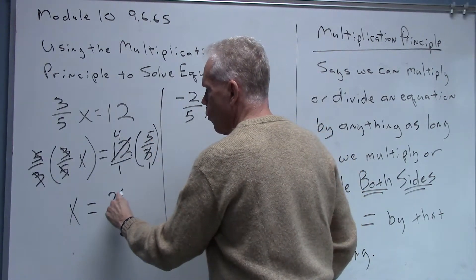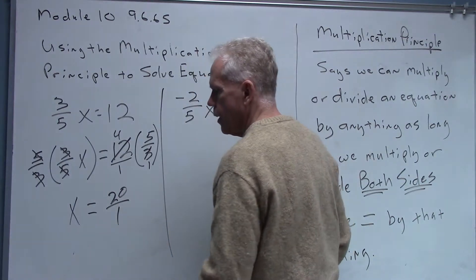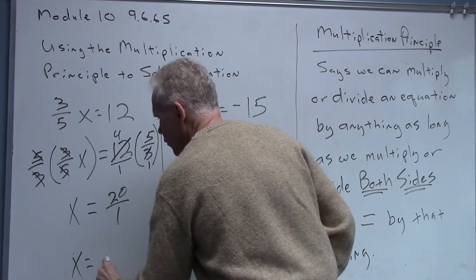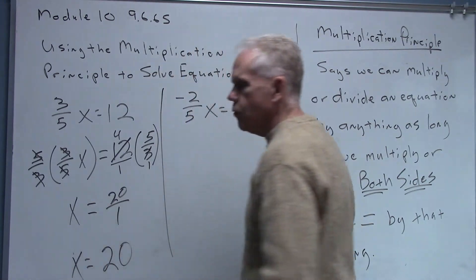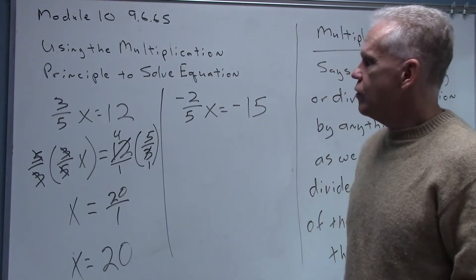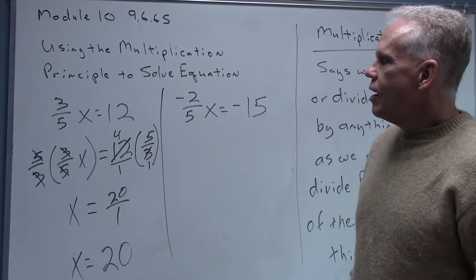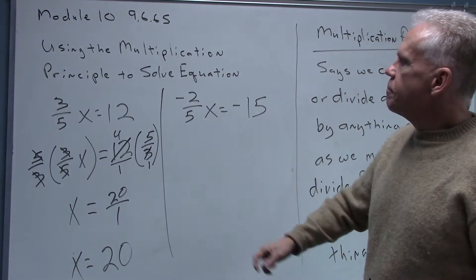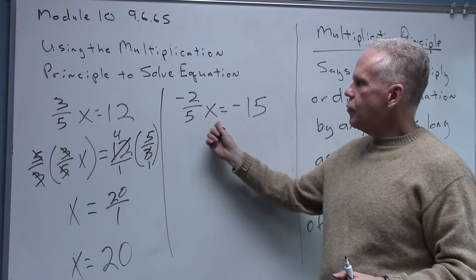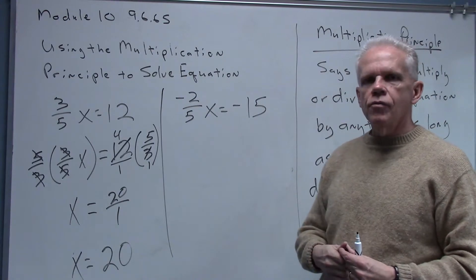So in the end my answer is 20 over one, which is 20. That'll be the solution to this equation. All right, I want you to pause the video for a second and pop into this one and see what you can do with this one, and then we'll come back and work it together.